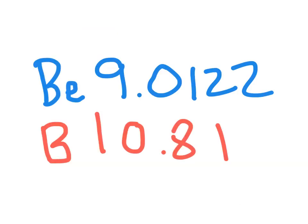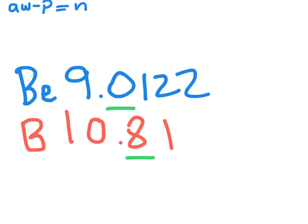To round, we need to look at the first number after the decimal. If the number is less than 5, we round down. So for beryllium, we'll get an atomic weight of 9.